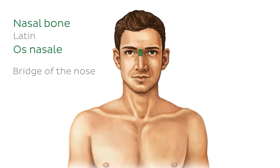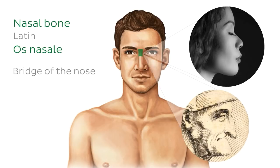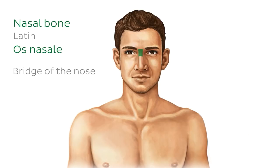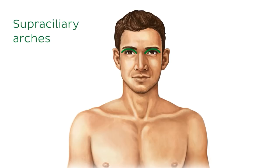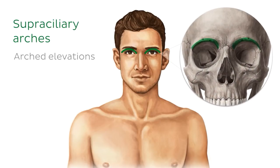Nasal bones come in all shapes and sizes, as we can see in the people around us. The complete outline of the orbital margin can also easily be traced on either side of the nasal bones. In particular are the supraciliary arches, which can be clinically useful for us as they indicate the position of the frontal sinuses. These two arched elevations are prominent medially, and can help us find the supraorbital notch or foramen, which is where the supraorbital nerve passes through.